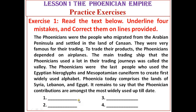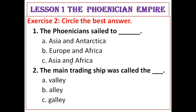The next question is Exercise 2: circle the best answer from the choices given. The first question asks what the Phoenicians sailed to — the choices are: Asia and Antarctica, Europe and Africa, or Asia and Africa. The second question asks what the main trading ship was called — the choices are: valley, alley, or galley. You have to choose and circle the correct answer.